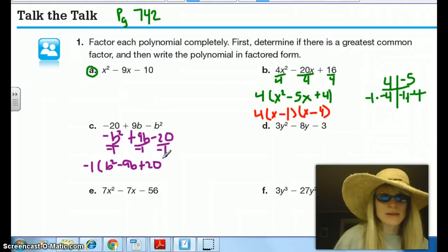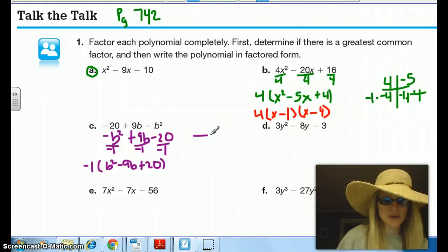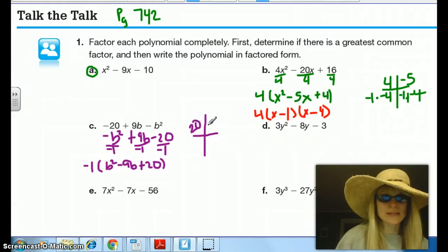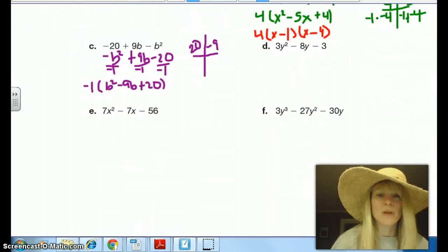And then from here, I can go ahead and look at my binomial. I'm just going to make my t-chart. What multiplies to 20 but will add to negative 9? And that's going to be very similar to B. So why don't you go ahead and pause the video and finish.